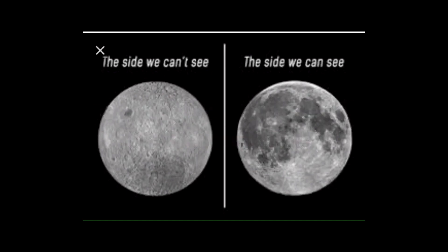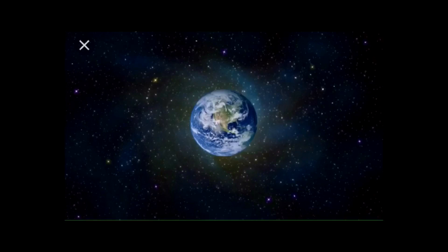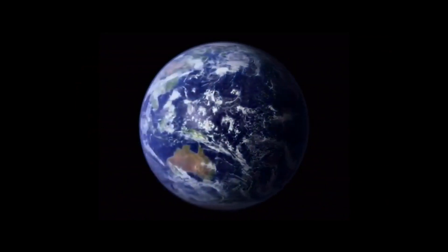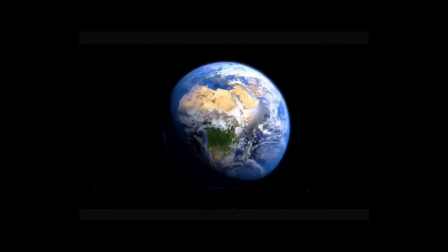So basically, standing on the near side of the moon — which is where all of the Apollo missions supposedly landed — you would be able to look up in the sky and wherever the Earth was positioned, it would appear to be up there pretty much hanging there motionless and just spinning. So it would look a lot more like this. It would rotate a little and the sun would rotate around it and you would get phases. So it would hang there spinning and going through phases, but it wouldn't be rising. It's not going to ever rise. Do you understand that?